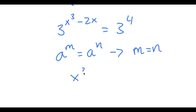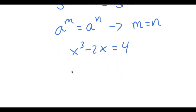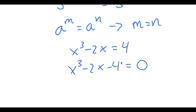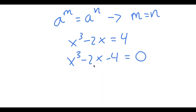So in this case, x to the power of 3 minus 2x is equal to 4, meaning x to the power of 3 minus 2x minus 4 is equal to 0. To solve this, we have to find one solution of x first, so we can use that solution to find the other solutions.